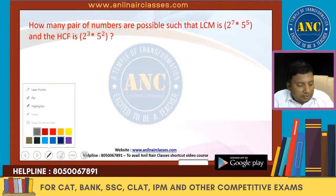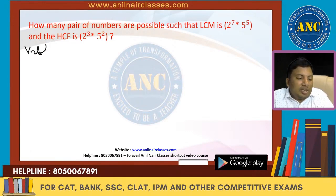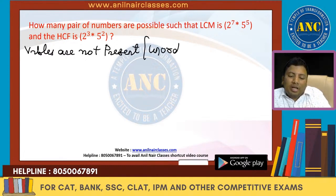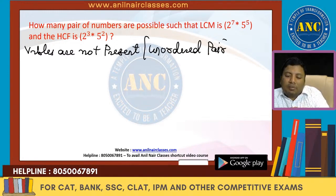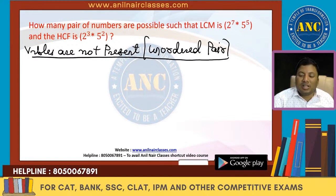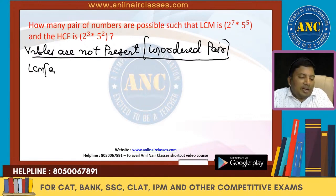Next question: how many pairs of numbers are there? Since variables are not present in the question, it is an unordered pair. How many pairs of numbers are possible such that their LCM is a given value?